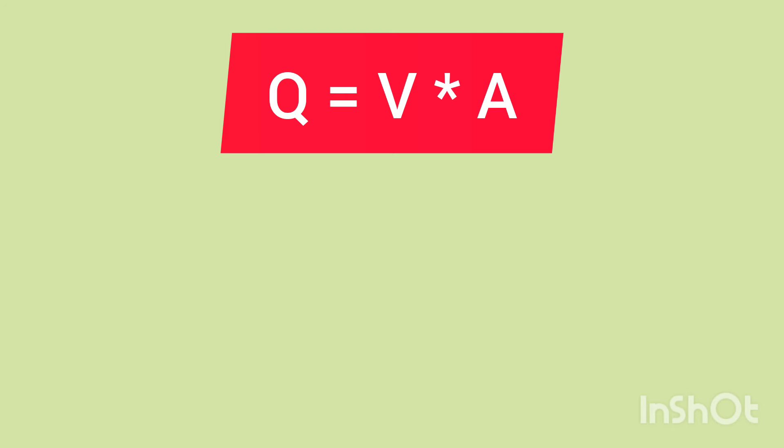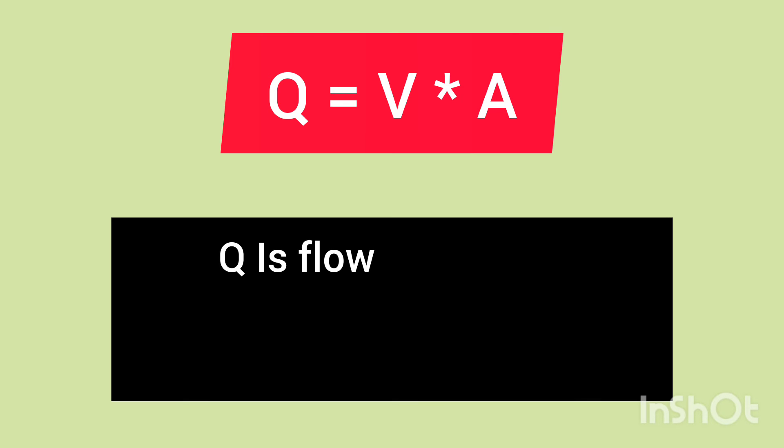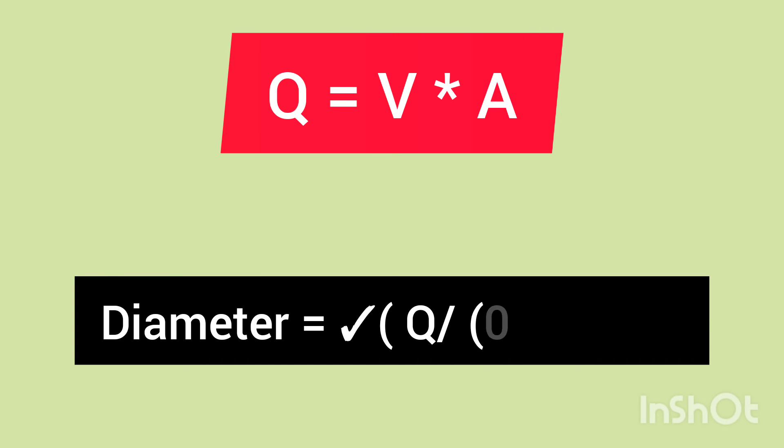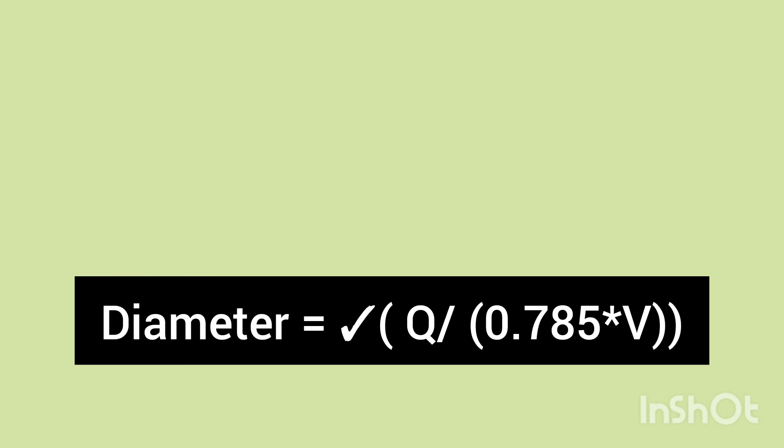Before we start with the example, we can rearrange this formula. Diameter equals square root of volumetric flow rate in meter per second divided by 0.785 times velocity. 0.785 is the value of π/4.